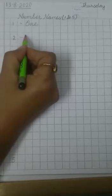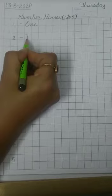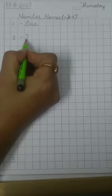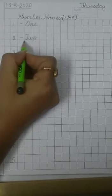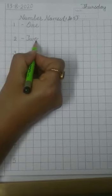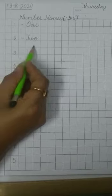Write number 2. Put a small dash here. Now write capital T like this, then small W O. T W O. 2. Leave a line here.